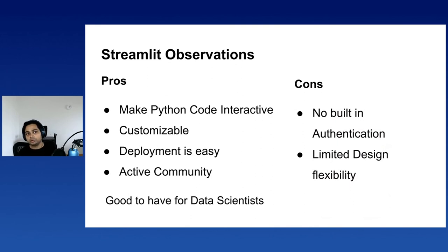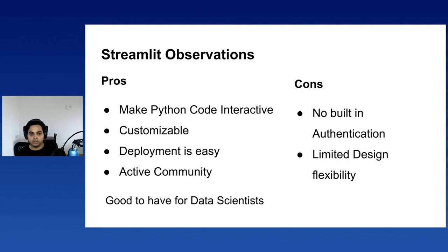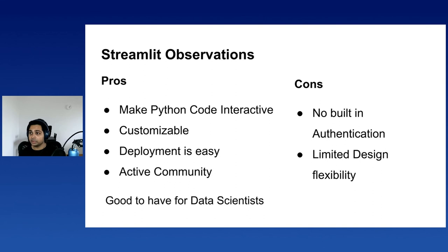Some observations: what Streamlit is really good at is making your Python code really interactive in just a few lines of code. It's really simple and easy to follow, and you can customize it however you like across almost all the interactive components. Deployment is also really easy, and the community is very active. On the forum, if you ask questions you get feedback quite instantly.